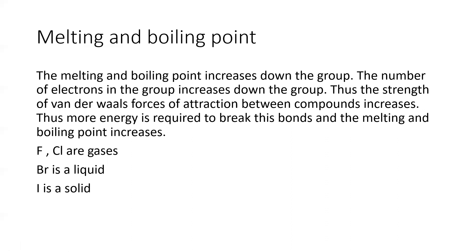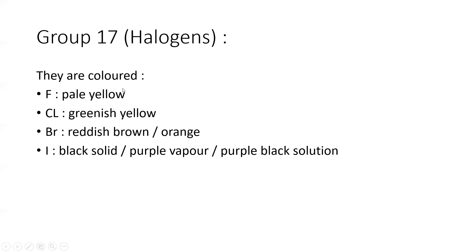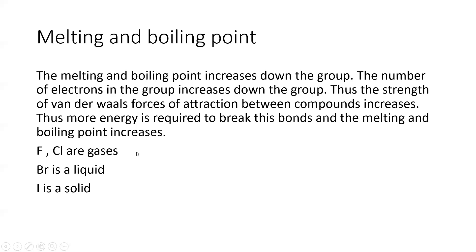Melting and boiling points increase down the group because the number of electrons in the molecule increases, strengthening van der Waals forces of attraction between molecules, so more energy is required to break these bonds. That's why fluorine and chlorine are gases, bromine is a liquid, and iodine is a solid. The color intensity also increases down the group, going from lighter to darker colors.